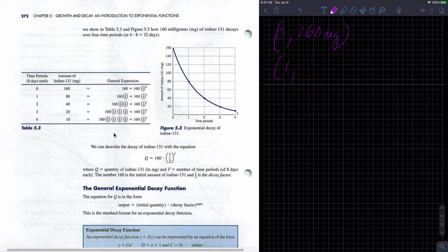And at day one, we now have, I'm sorry, not day one, time period one, we have 80 milligrams. So we know that after time period one, we have half the amount, so that means one time period is equal to eight days.